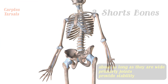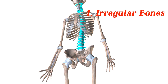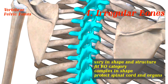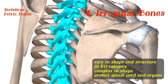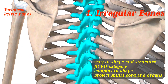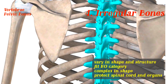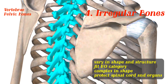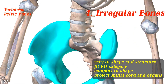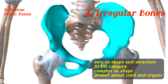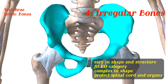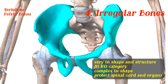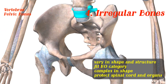Fourth, we have your irregular bones, like your vertebrae. These bones vary in shape and structure — they don't typically fit a category, so they have their own. They have a very complex shape, and because of that, they have their own category. Your pelvic bones are also an example of irregular bones, along with your vertebrae.